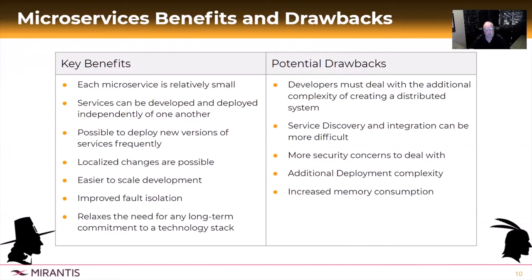The potential drawbacks: developers have to deal with additional complexity especially in the deployment phases because things are distributed. Service discovery becomes an important part — cataloging new things coming in or recognizing things that show up in clusters running the frameworks. This represents a lot more security concerns than it used to. Deployment is more complex than it used to be. People tell me it requires more memory consumption than its predecessors, but I'm not convinced of that myself.